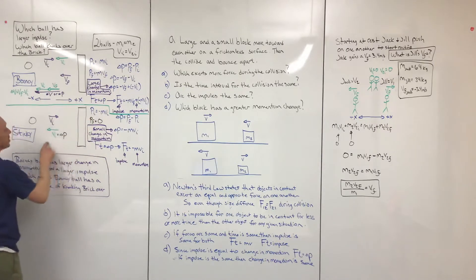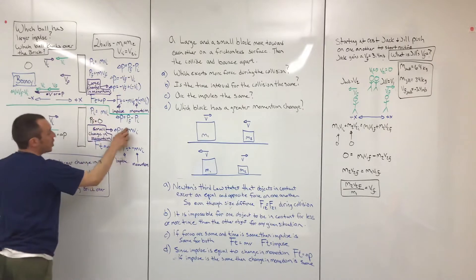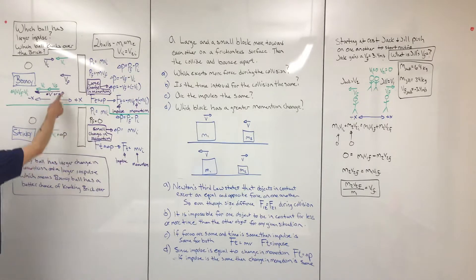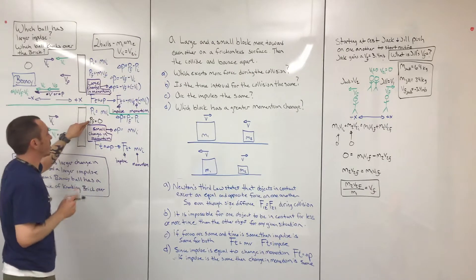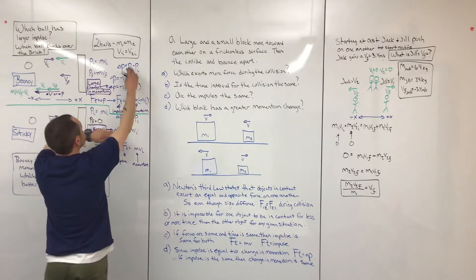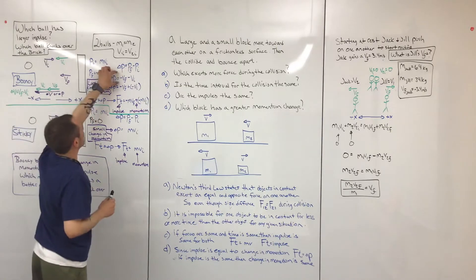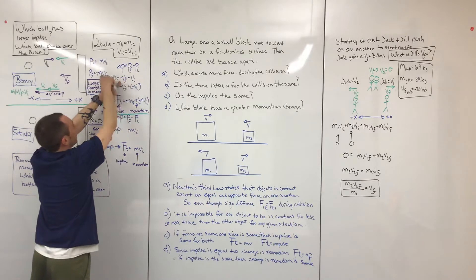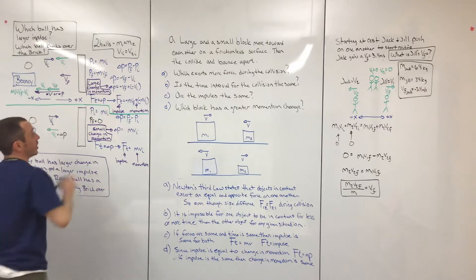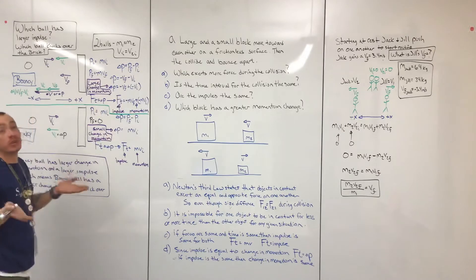Now let's look at the momentum for the sticky ball. The sticky ball has an initial momentum of mv, but the final momentum is going to be zero because it's going to stick — no bounce back, no final velocity, so momentum is zero. If we want to look at the changes in momentum, we know change in momentum is final minus initial. For the bouncy ball, since the final momentum is negative, we keep that subtraction sign — what ends up happening is these values end up adding.